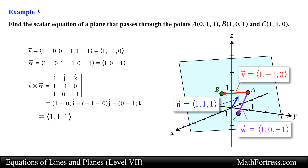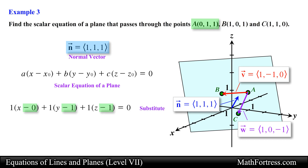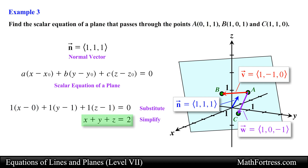The last step is to substitute the coordinates of one of these points and the components of the normal vector. Using point A as our initial point, we substitute the coordinates of point A and the components of the normal vector into the scalar equation of the plane. Simplifying and moving the constant to the other side, we obtain the following scalar equation of the plane, and this is our final answer.